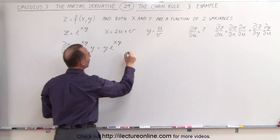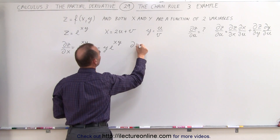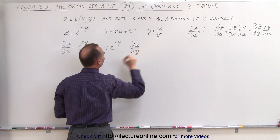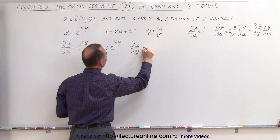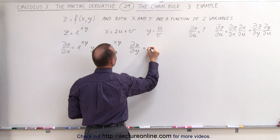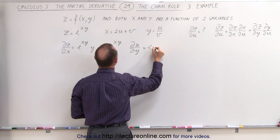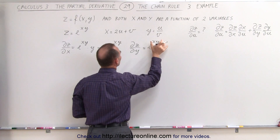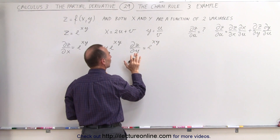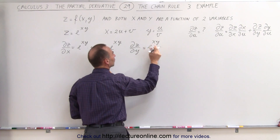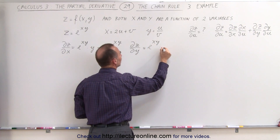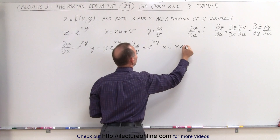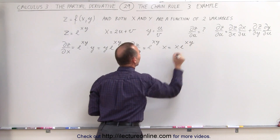Now we take the partial derivative of z with respect to y instead of x. This is equal to e to the x times y, times the derivative of the exponent. Now this is with respect to y, so x becomes the constant, giving us times x, which equals x·e^(xy).